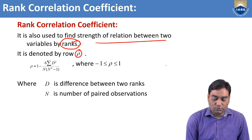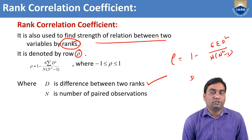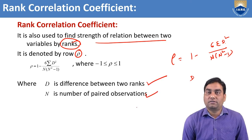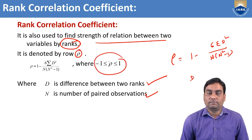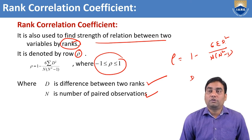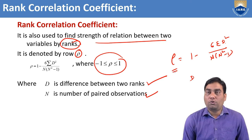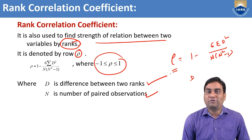The symbol is rho. The rho formula is: 1 minus 6 sigma d square, divided by n into (n square minus 1). Here, d is the difference between two ranks and n is the number of paired observations. The rho value also lies between minus 1 to 1. Using this formula, we can find the relation between two variables by using ranks.